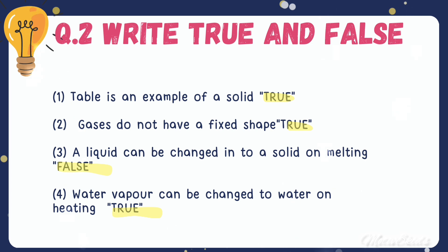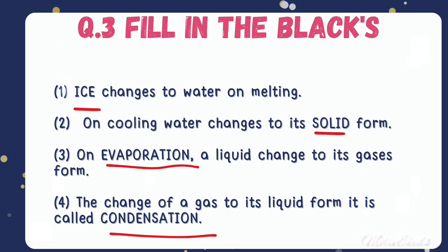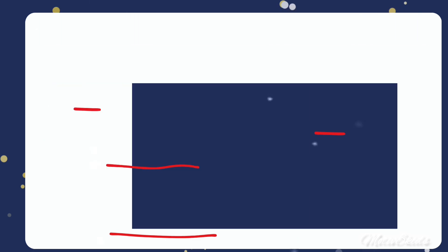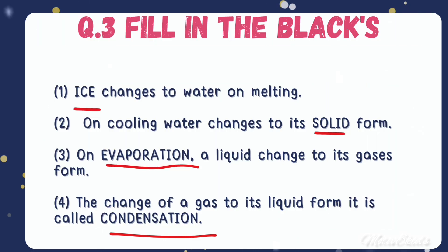Question number three: fill in the blanks. Ice changes to water on melting. On cooling, water changes to its solid form. On evaporation, liquid changes to its gaseous form. The change of gas to its liquid form is called condensation. The underlined parts denote the answers to the questions.